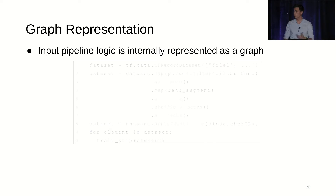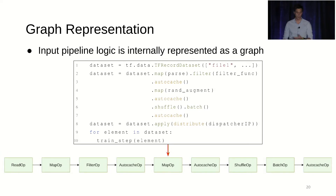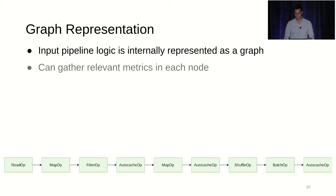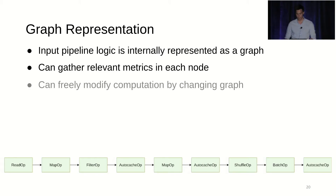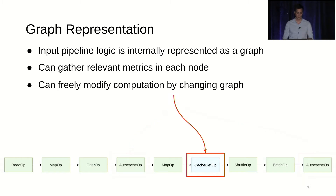Because we build on top of TF Data, we inherit its graph representation. In this example, you obtain a graph where nodes are the transformations and edges are the flow of data between them. This allows us to conveniently gather metrics at every single node, which we use for our auto-scaling and auto-caching decisions. It also allows us to freely modify the computation workers do by changing the graph structure — for instance, scanning for auto-cache ops and replacing them with a cache-get operation.